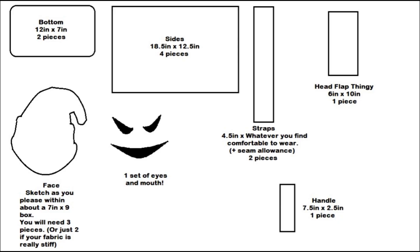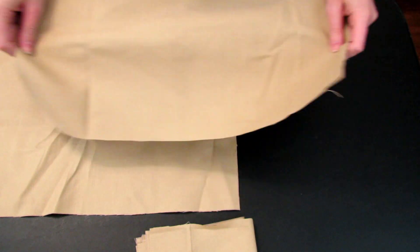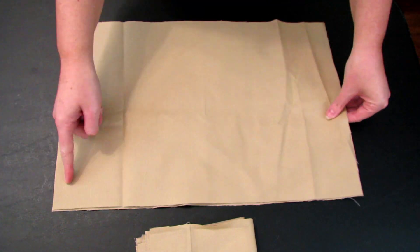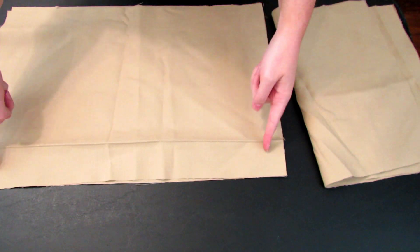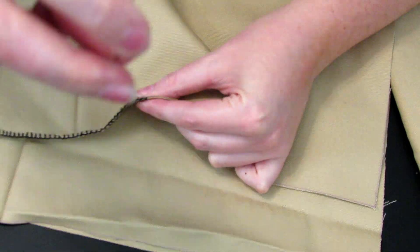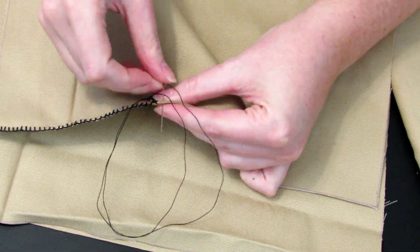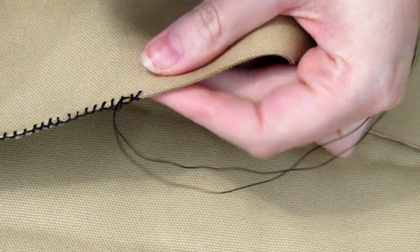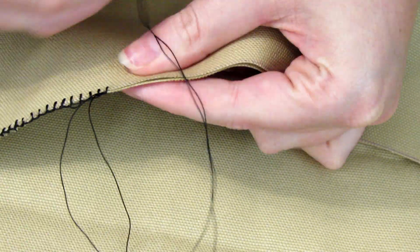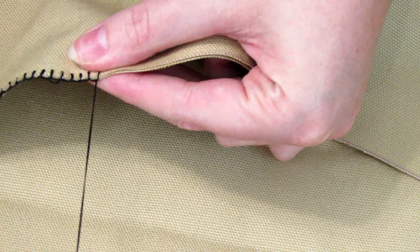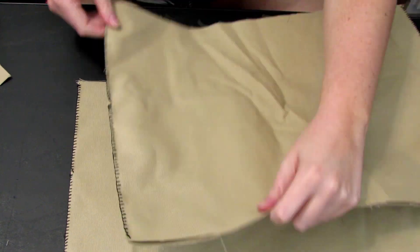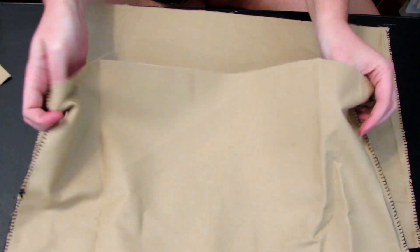Now that we have the pattern drawn out we can begin cutting out the fabric and putting it together. Cut out the four wall or side pieces. You will be making an inside lining and an outer bag. Sew down the side seams for each of the bags. This is the shorter sides, the 12.5 inch sides.